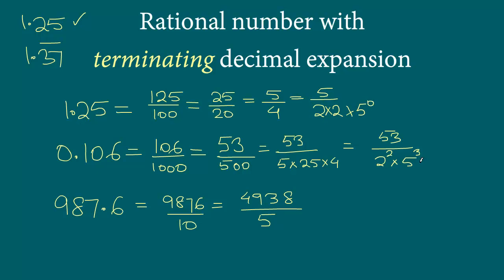This may look strange, but there are infinite numbers that have a terminating decimal expansion. You can pick any number, any decimal number, and when you write it in the form of a rational number p by q, the q, the denominator, will always look something like this.